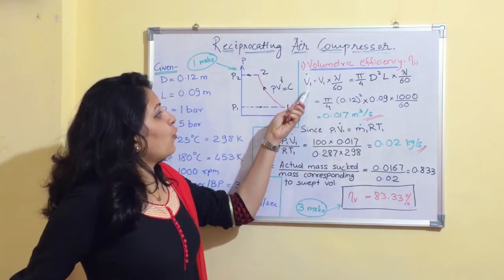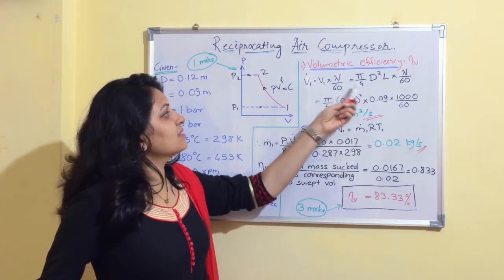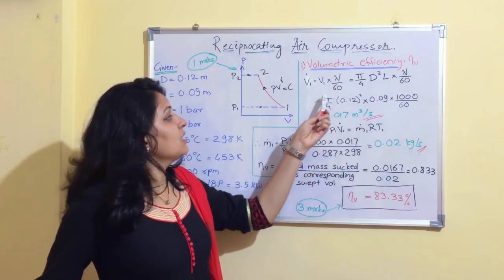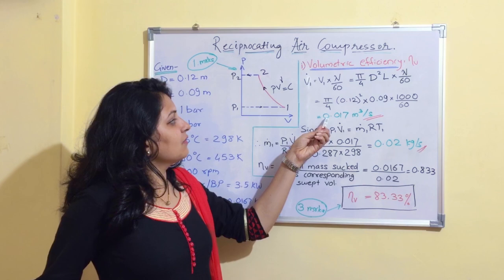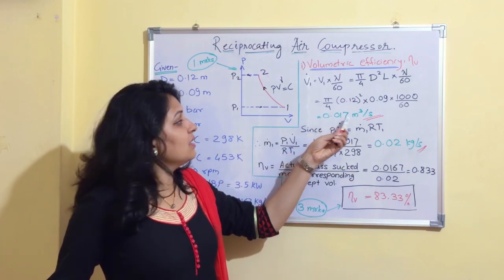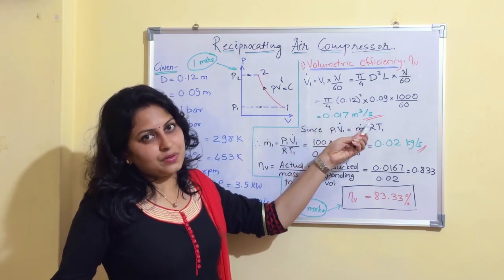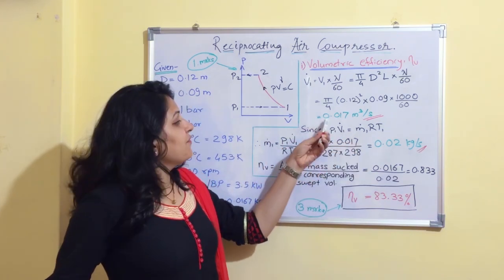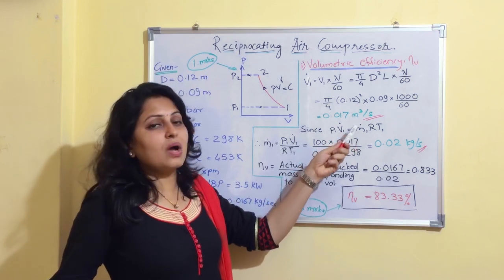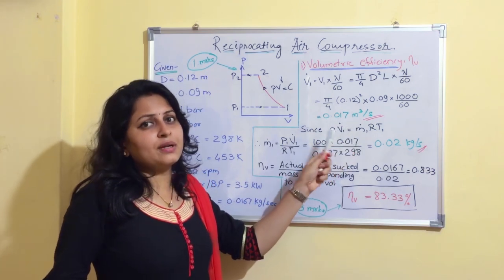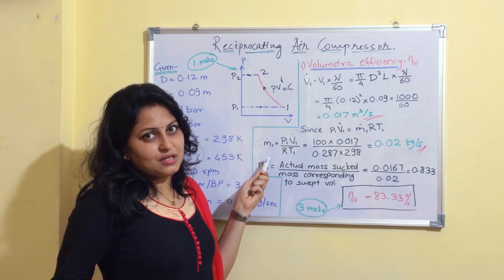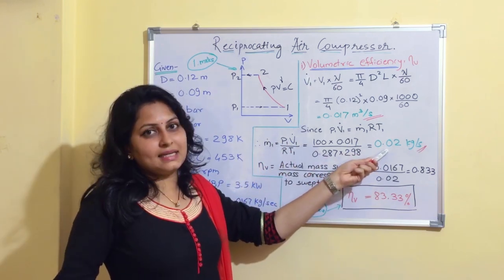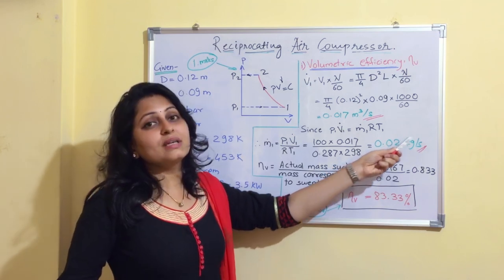The theoretical volume flow rate is given by (π/4) · D² · L · N/60. Substituting all values, we get 0.017 m³/s. Since we know PV = mRT, where V̇₁ is volume flow rate and ṁ₁ is mass flow rate corresponding to swept volume, we can find the mass flow rate using P·V/(R·T). We ultimately get 0.02 kg/s.